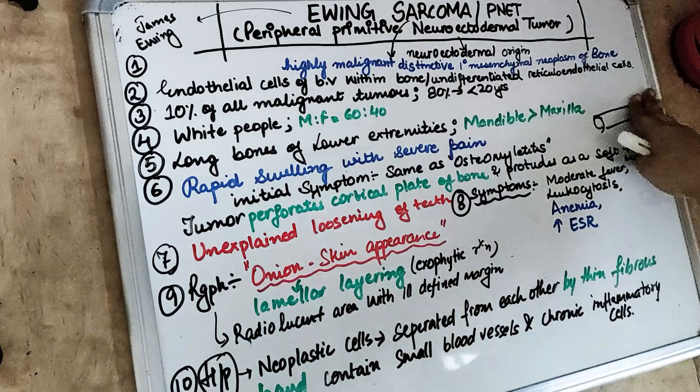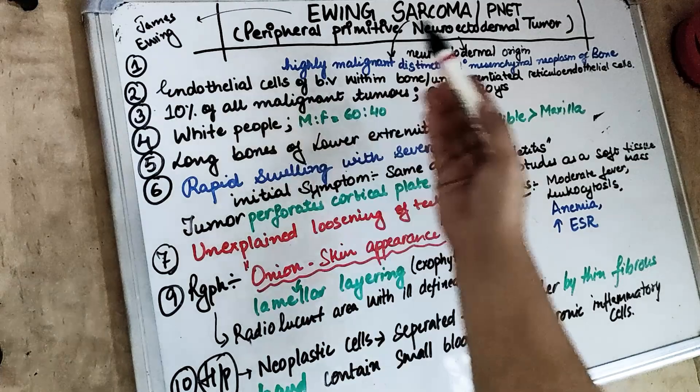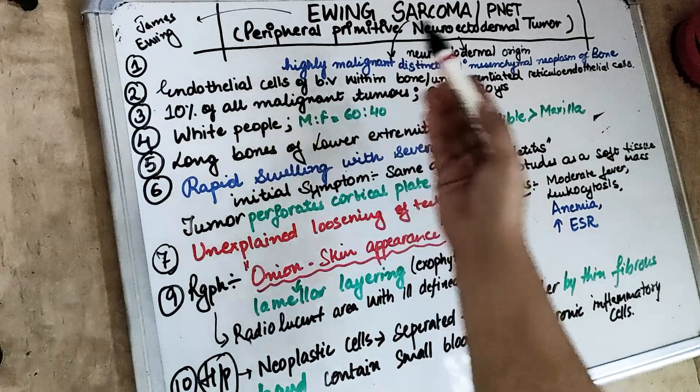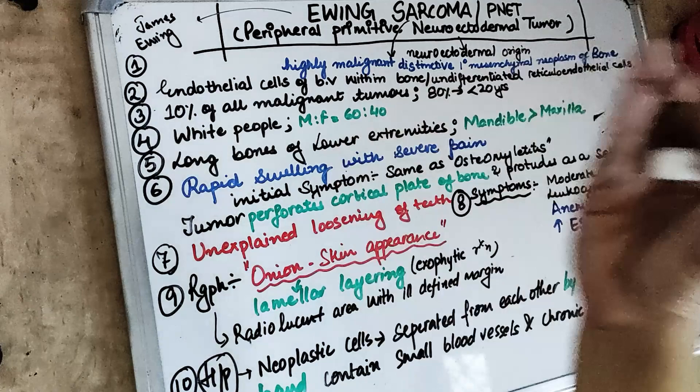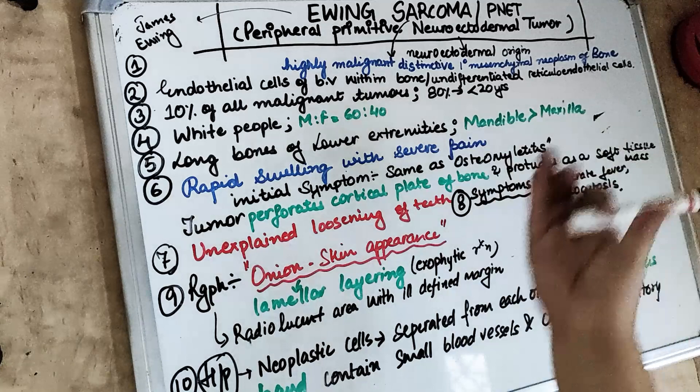More recently, the origin is considered to be from neuroectodermal cells — hence the name peripheral primitive neuroectodermal tumour (PNET). So Ewing Sarcoma is now said to be derived from peripheral neuroectodermal cells, which is why it is also called PNET.